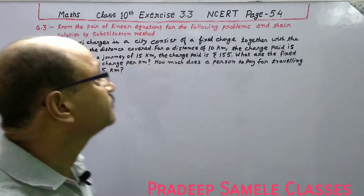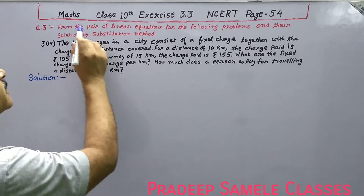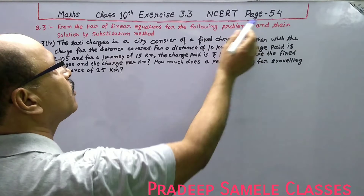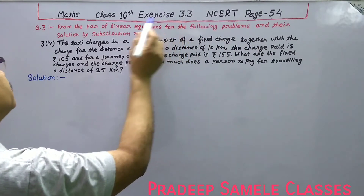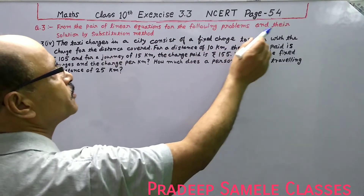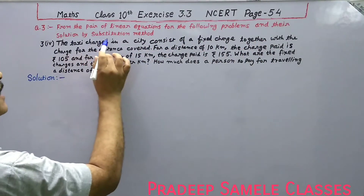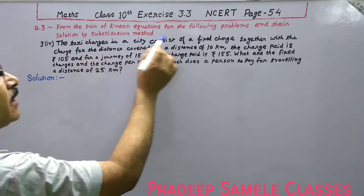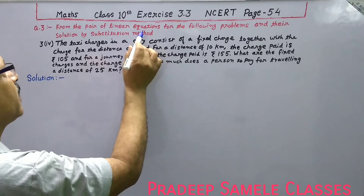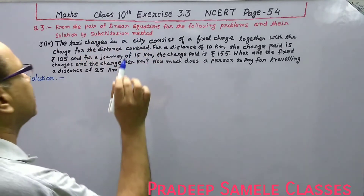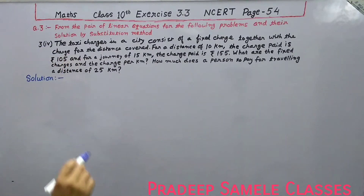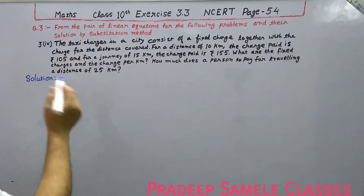Hello friends. This is Maths Class 10th NCERT textbook, page 54, Exercise 3.3, Question 3 — solving problems by substitution method. These are word problems forming linear equations solved by substitution method. This is the fourth part of Question 3; the first three parts were shown in the previous video.